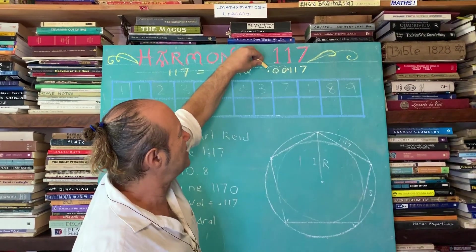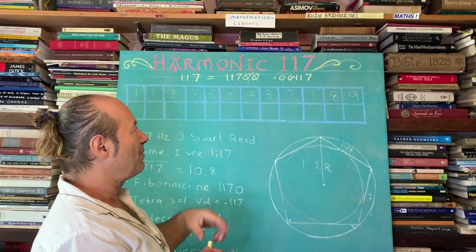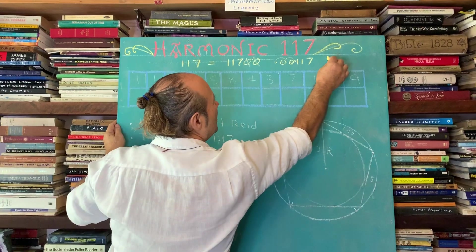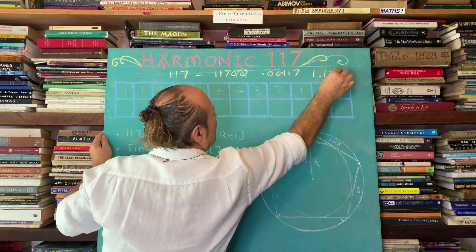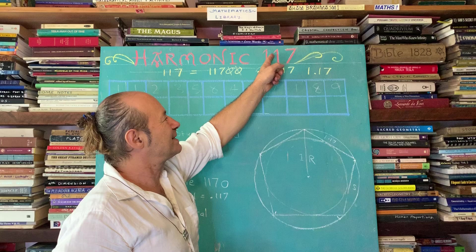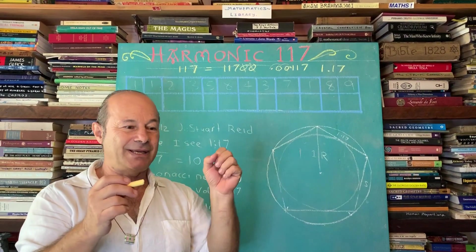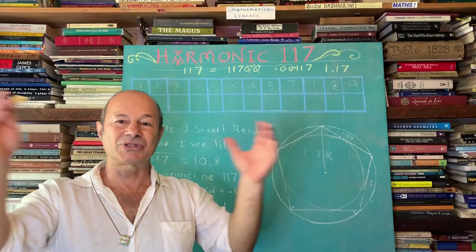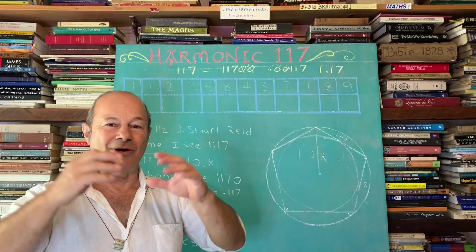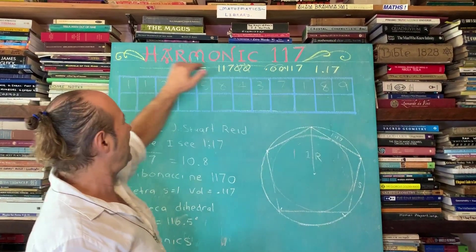We cross out the zeros and move the decimal. But I could also say 1.17 is also a harmonic of 117. We're allowed to slide the decimal. Sliding the decimal means you can make something bigger or smaller, galactic or atomic. This is called harmonic maths.